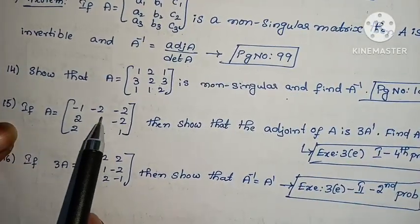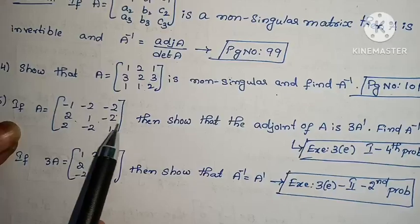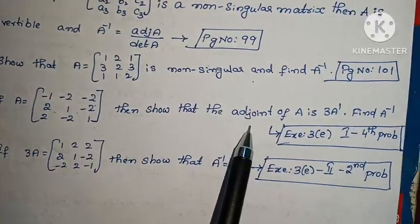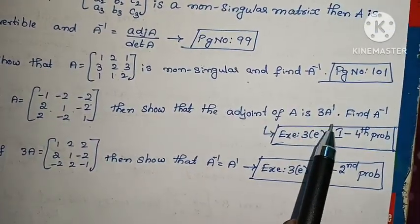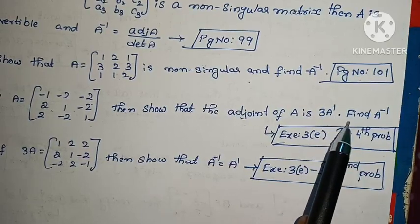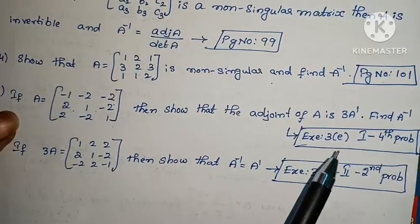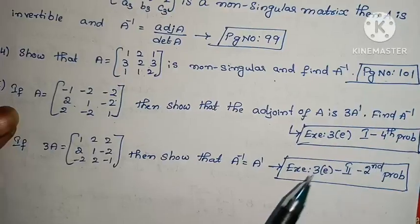If A equals to [-1, -2, -2; 2, 1, -2; 2, -2, 1], then show that adjoint of A is 3Aᵀ, and find A⁻¹. Exercise 3(e), first roman, fourth problem.